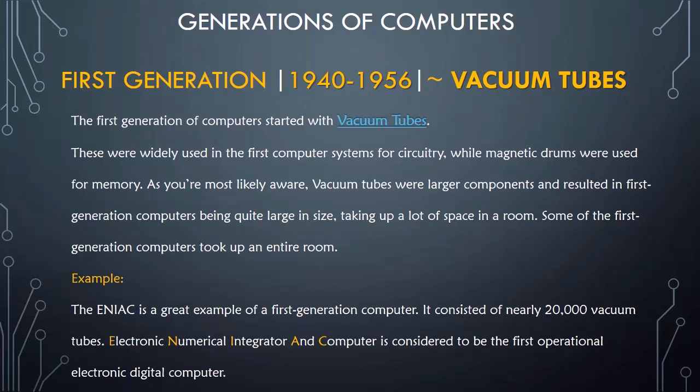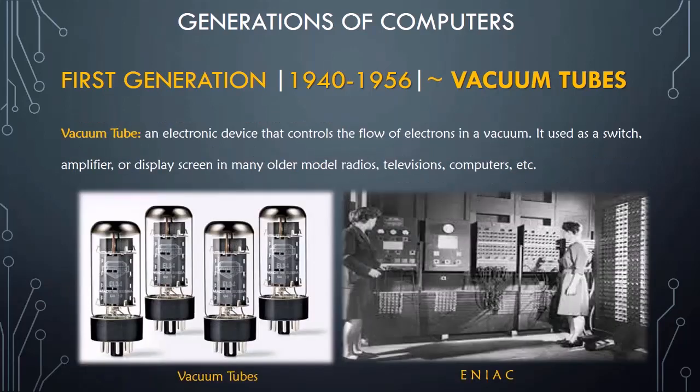A vacuum tube is an electronic device that controls the flow of electrons in a vacuum. It is used as a switch, amplifier, or display screen in many older model radios and televisions.